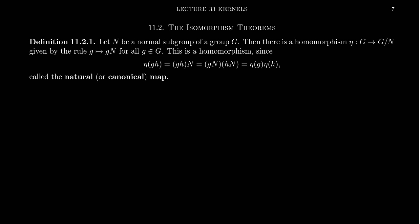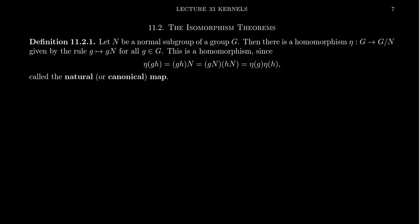Before we do that, I first want to define what it means for a function to be natural. To be more precise, I should be doing this in the context of homological algebra, which goes beyond the scope of this first semester course in group theory. But we can define at least what it means for a homomorphism from a group to a quotient group to be natural in that context.